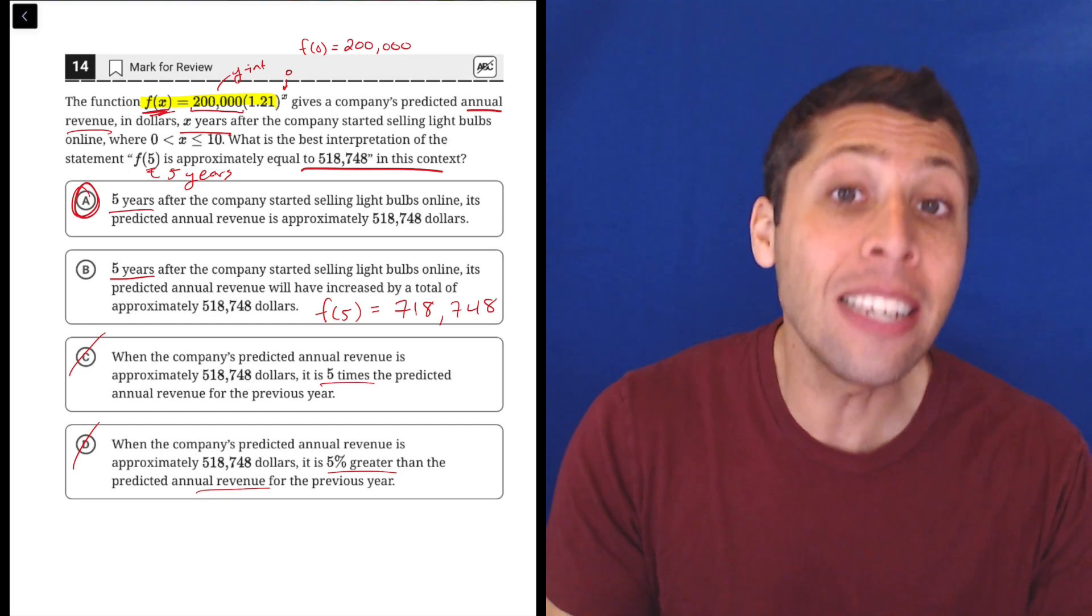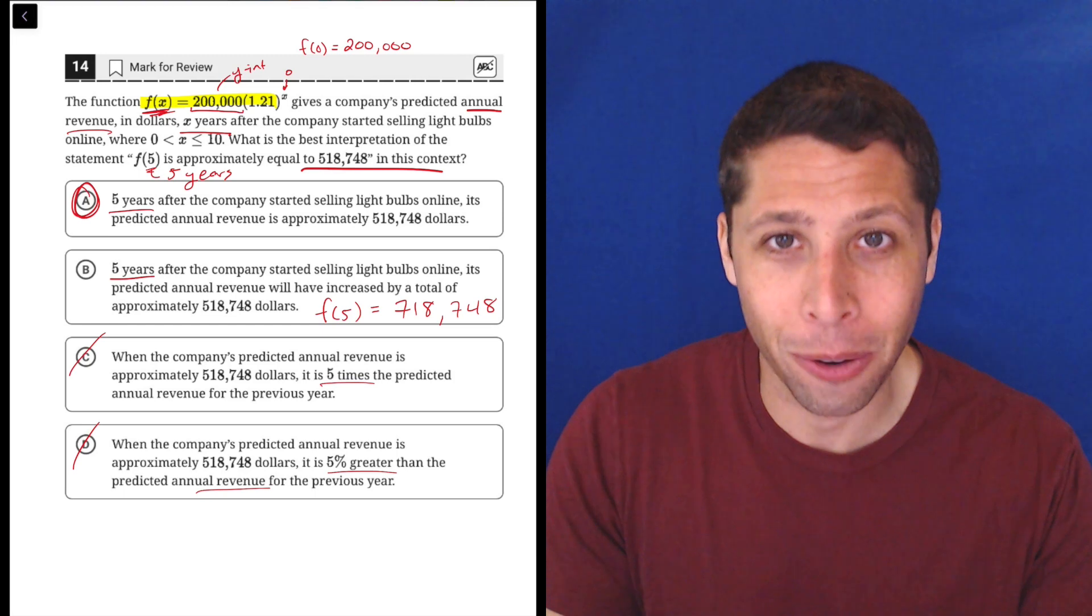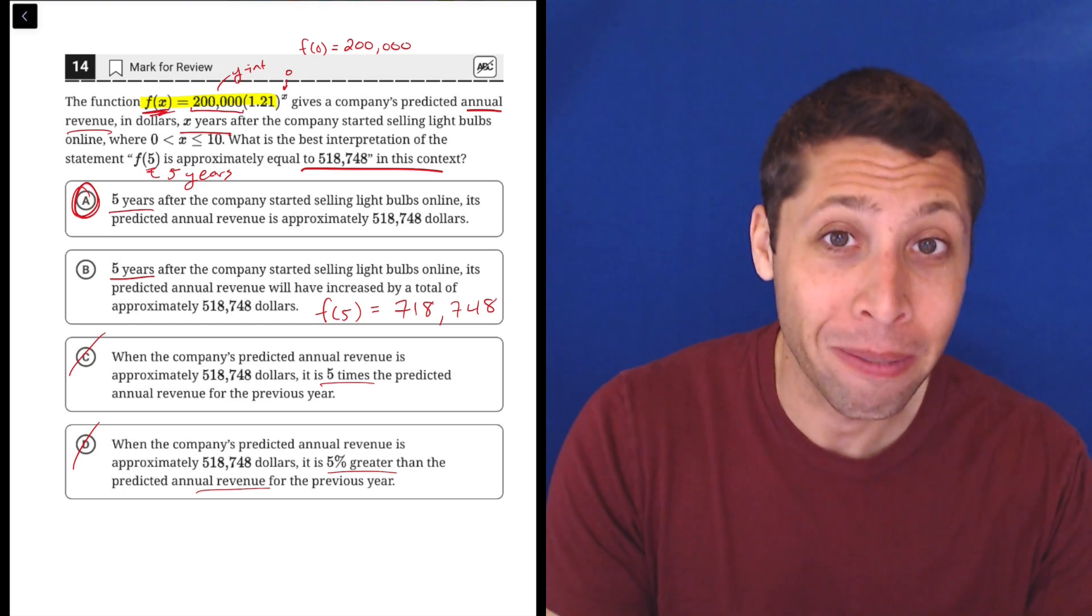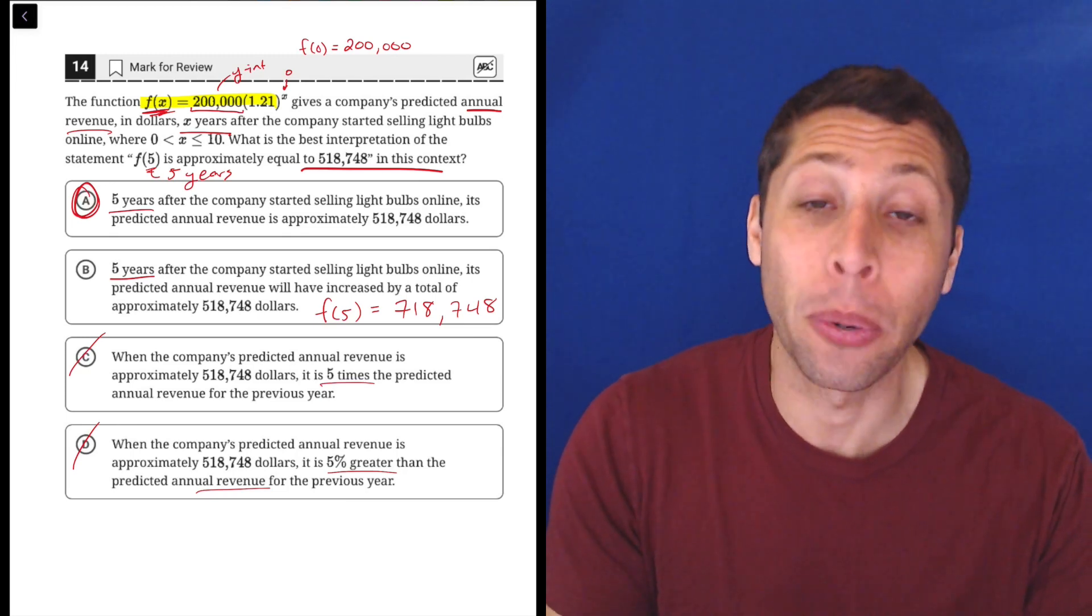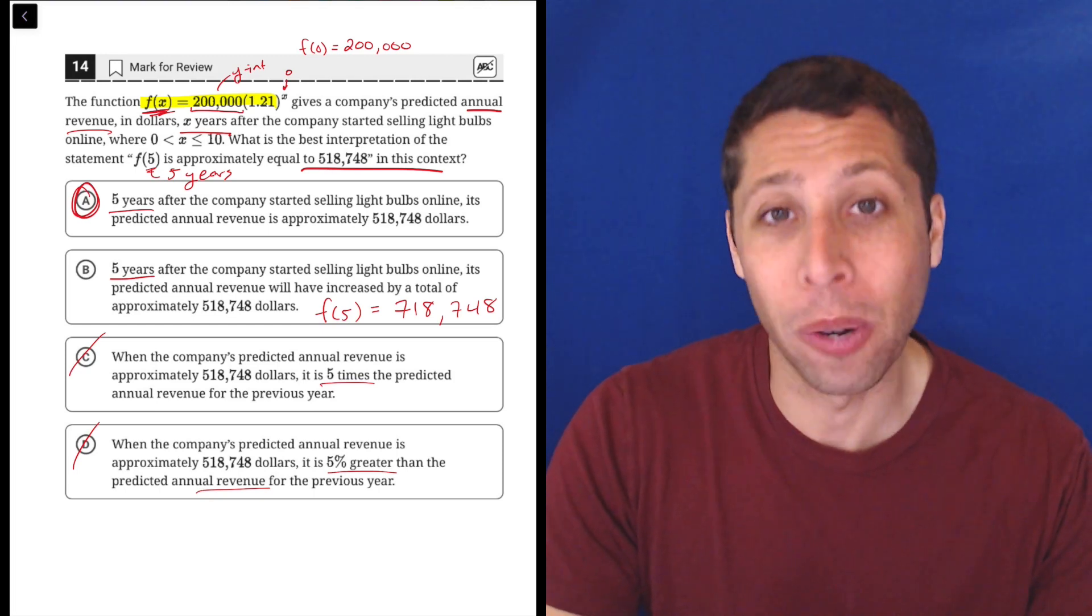So thinking about that can at least increase your odds. So that's the thing I want you to take away. Don't let the story scare you. The story is always going to tell you what the variables mean. And honestly, that's really all they're asking. What do the variables represent? What do the numbers that we put in place of those variables represent? And the units can help you a lot, which they will always tell you.